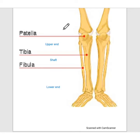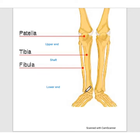Fibula is a long and lateral bone of our leg. It does not take part in weight transmission, but it provides attachment to muscle. Above, it does not take part in formation of the knee joint, but it articulates with the tibia bone. And distally, it takes part in formation of the ankle joint by articulating with the tibia bone.